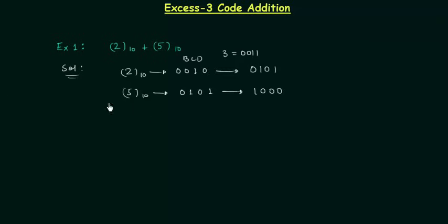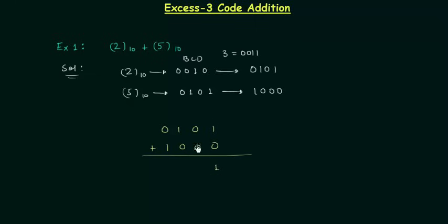Now we will perform the addition: 0101 plus 1000. Two numbers are added using basic laws of binary addition — there is nothing new to it. 1 plus 0 is 1, 0 plus 0 is 0, 1 plus 0 is 1, 0 plus 1 is 1. So this is what we have as the result of addition. But this is not the correct answer because we are missing one very important point.